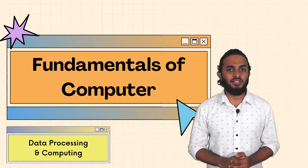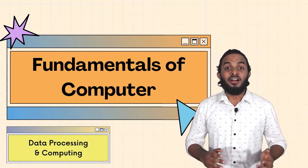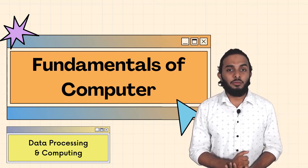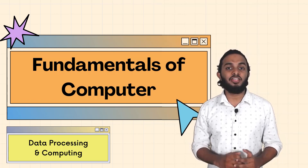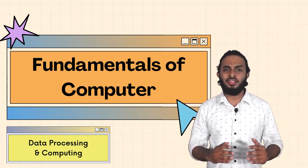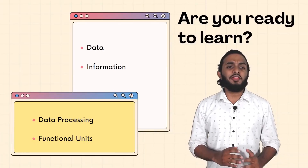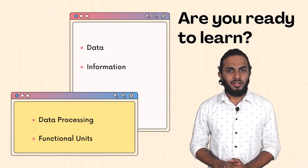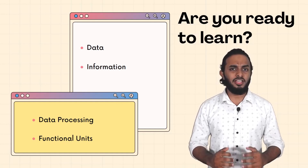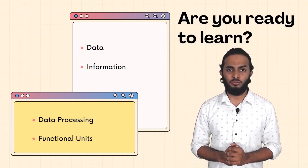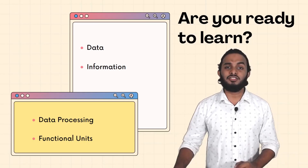In these two chapters, the first one is functional units. Fundamentals of the computer is the first chapter. We will discuss data, information, data processing, and other things in this session. Data comes to information through a process — how does data come to the process, and how do we discuss functional units? These are the same things we will discuss.